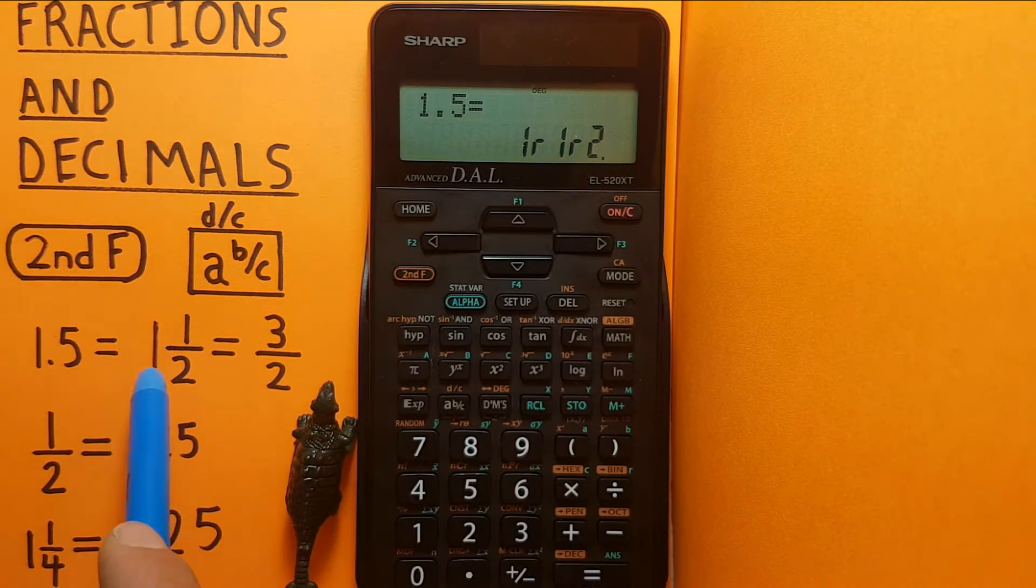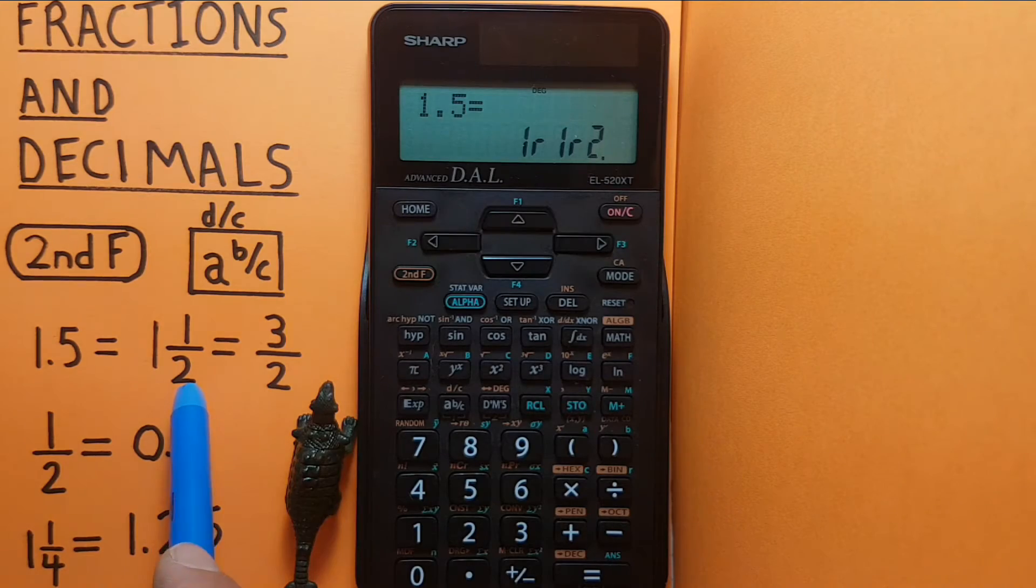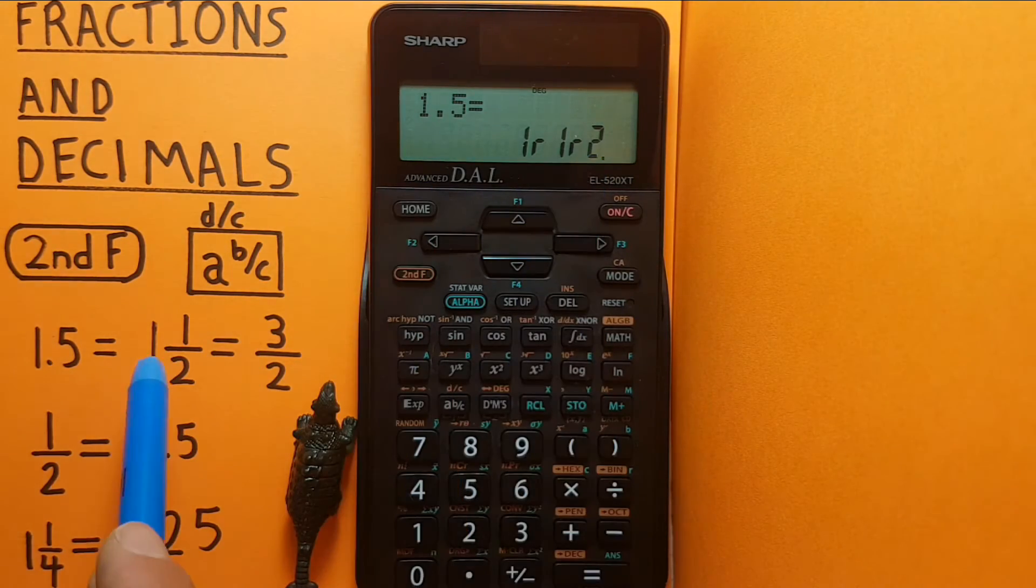What this means is 1 and 1 half. Each r separates the numbers out.